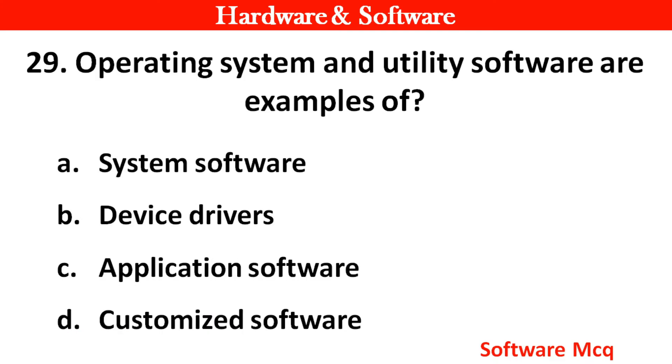Question 27: Operating system and utility software are examples of? Right answer is option A — System software.